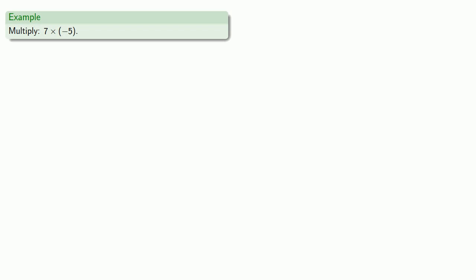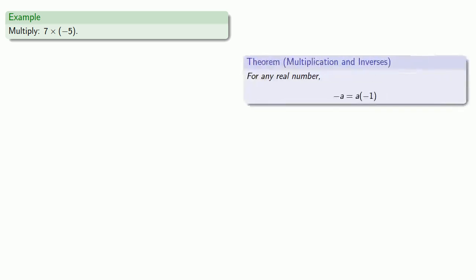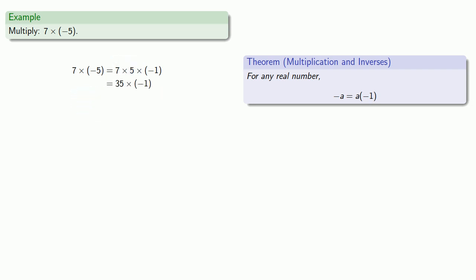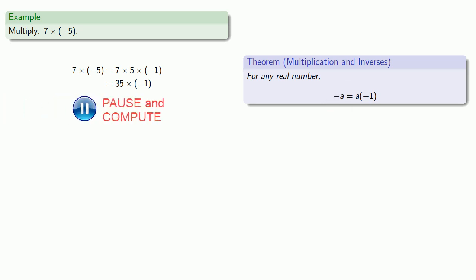Let's consider a multiplication: 7 by the additive inverse of 5. Our theorem says the additive inverse of 5 is the same as 5 times negative 1. Associativity and commutativity of the real numbers says I can multiply 7 by 5 first. And the theorem says that if I multiply a number by negative 1, I get the additive inverse of that number. So 35 times negative 1 is the additive inverse of 35.